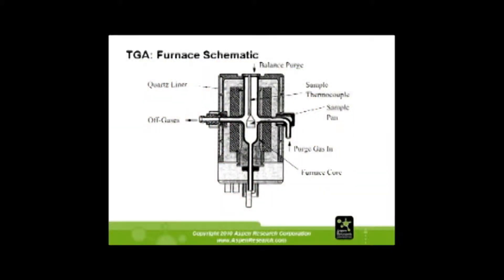Here's a close-up of the schematic. This is a quartz liner. Your purge gas comes in here and goes out this way. Your sample pan sits right here. Your thermocouple actually comes down a little further — it should come down right into here so that both the sample and the thermocouple are seeing the same temperature.